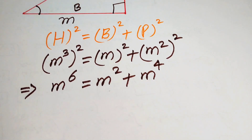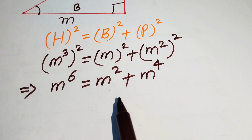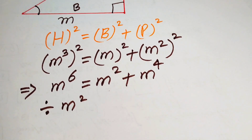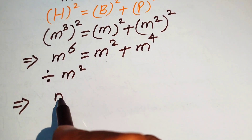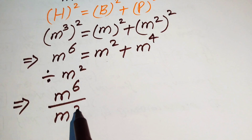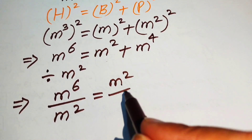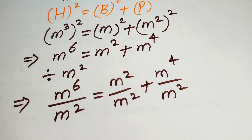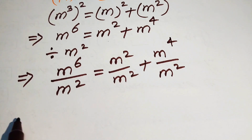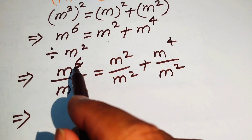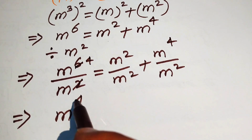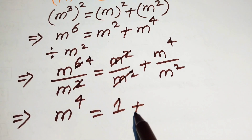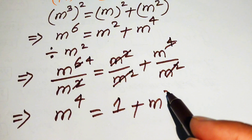Next, we divide both sides by m² since m² is a common term on both sides. This gives m⁶/m² equals m²/m² plus m⁴/m². Simplifying, we get m⁴ equals 1 plus m².